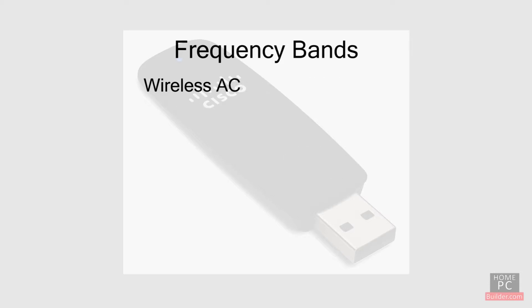Wireless AC runs exclusively in the 5 gigahertz band and has other improvements to its technology, which allow the 1300 megabit per second speed.